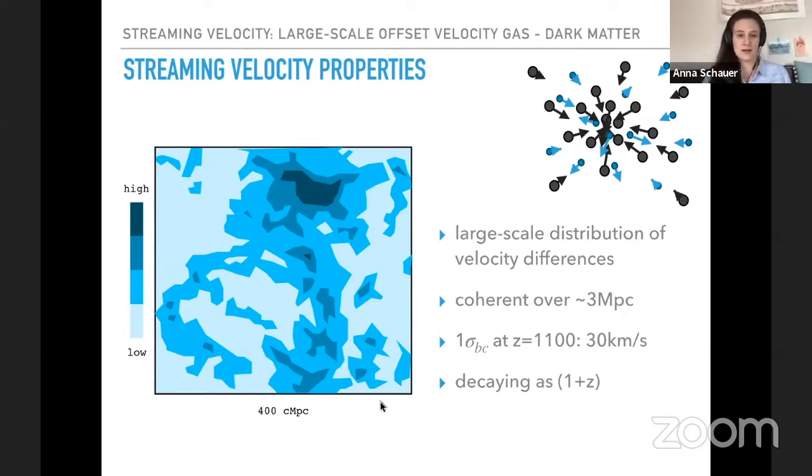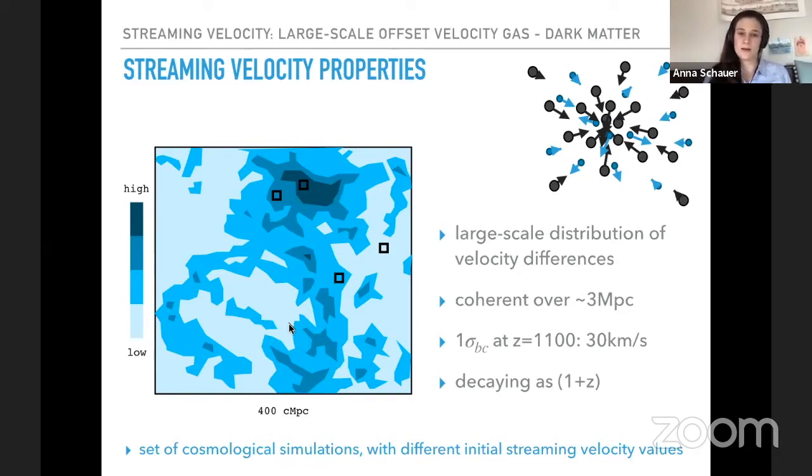And here you can see on how large scales this velocity different plays a role. So this is 400 megaparsec. And what we do with our simulations, because they are just one megaparsec big, we can now run different simulations in different spots of our larger scale. And what we do is we artificially insert a streaming velocity into our initial conditions. So we have the same initial conditions, but then introduce an additional velocity in x direction to mimic those different streaming velocity regions. And we can do that because our box is relatively small compared to this coherent length of three megaparsec.